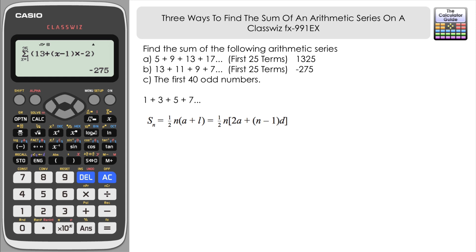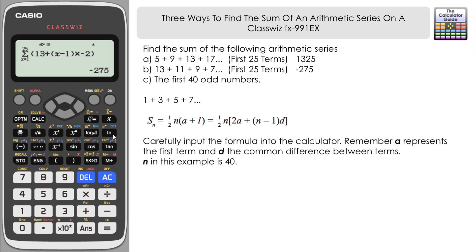n is 40. In brackets: 2 × a where a is the first term, 1, so 2 × 1, plus (n - 1) which is 39, times d. The common difference between odd numbers is 2, so times 2. Close brackets and press equals. Here we have our sum: 1600.